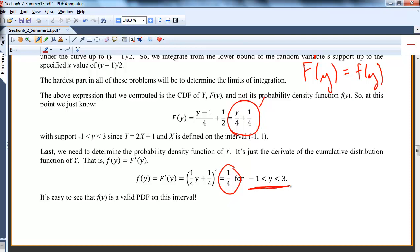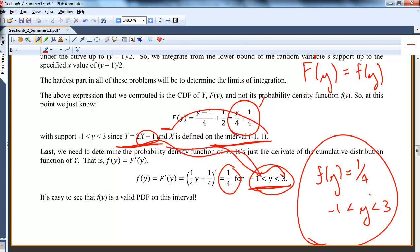Last thing is the support. Remember, x was defined on the interval negative 1 to 1. And y is equal to 2x plus 1, so negative 1 gets converted to negative 1. If I put 1 in here for x, this gets converted to 3. So this is the bounds, and actually it makes perfect sense. Then we have f of y is 1 fourth from negative 1 to 3. And that is definitely a valid PDF. It checks out. It's legal.